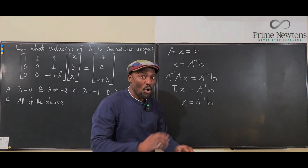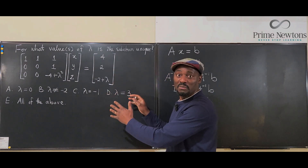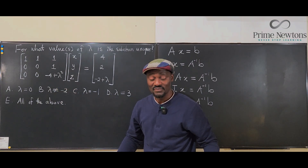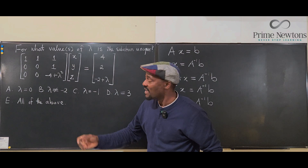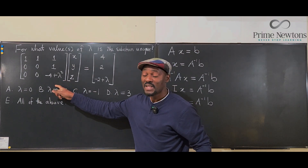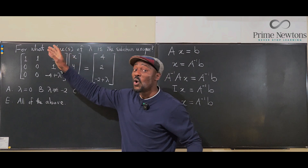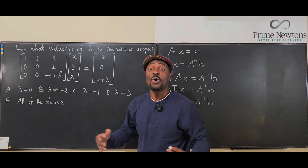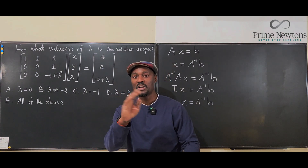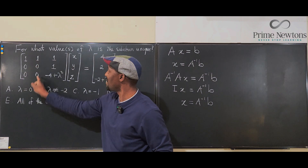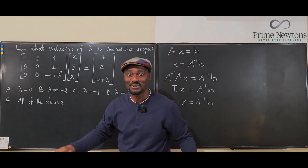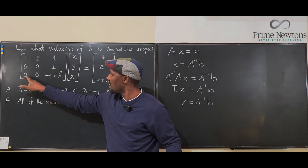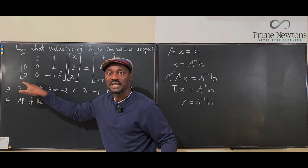All you need to ask in this problem is: does the inverse of this matrix exist? The answer is no. Why? Because for any matrix to be invertible, all the rows and all the columns must be linearly independent. That means you cannot have two rows that are multiples of each other. Looking at this matrix, this row is the same as that row — they are not linearly independent.